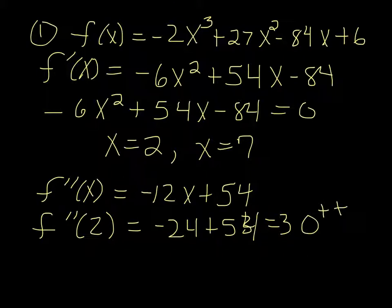So if we plug in 2 to that second derivative, we get -24 + 54, which is 30. It's positive, and so if the second derivative is positive, it's supposed to be positive, smile, and we have a minimum.